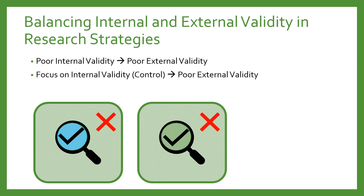To gain a high level of internal validity and be confident that significant results actually show that the independent variable causes the dependent variable, a researcher must eliminate or minimize extraneous variables — third variables or confounds — that interfere with the ability to conclusively state that changes in the dependent variable were due to the independent variable. To maximize internal validity, a study must be tightly controlled so that no extraneous variables can influence the results. However, controlling a study to this degree may create a research environment so artificial and unnatural that the results may not occur in the real outside world. Thus, attempts to increase internal validity can reduce external validity.